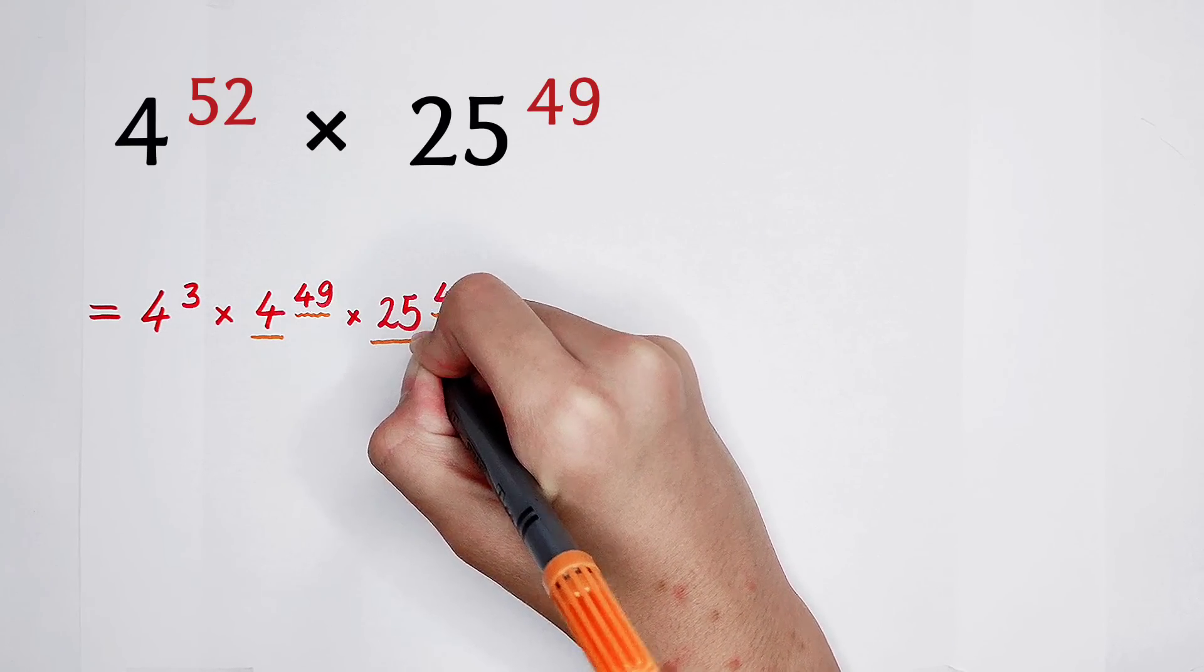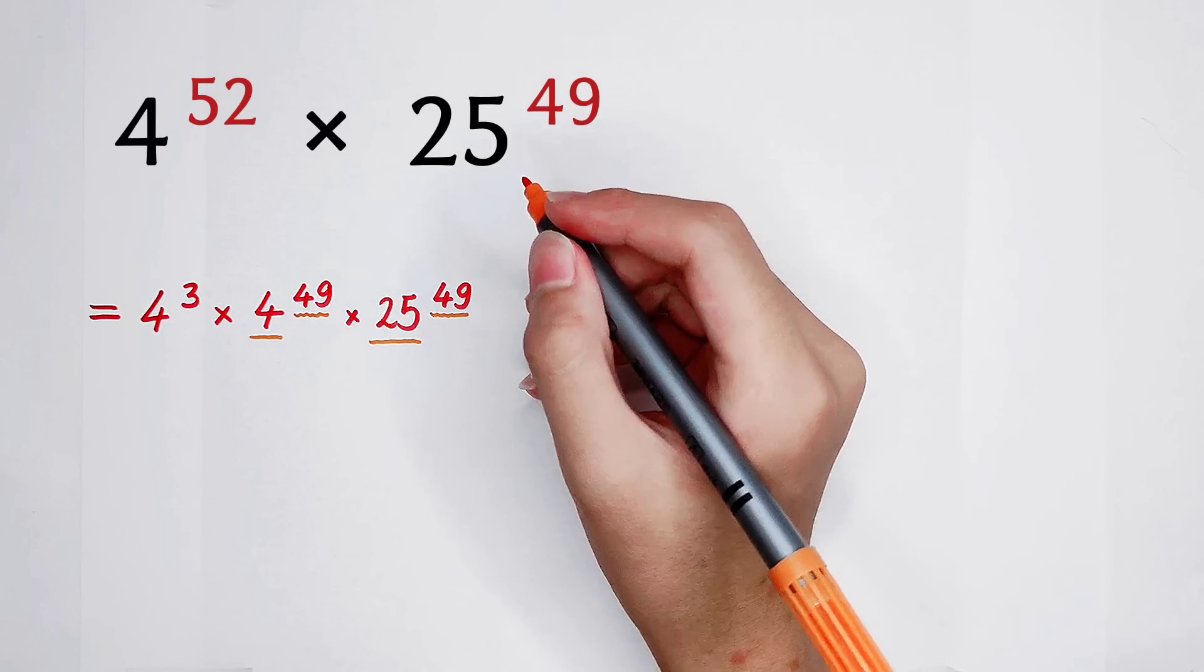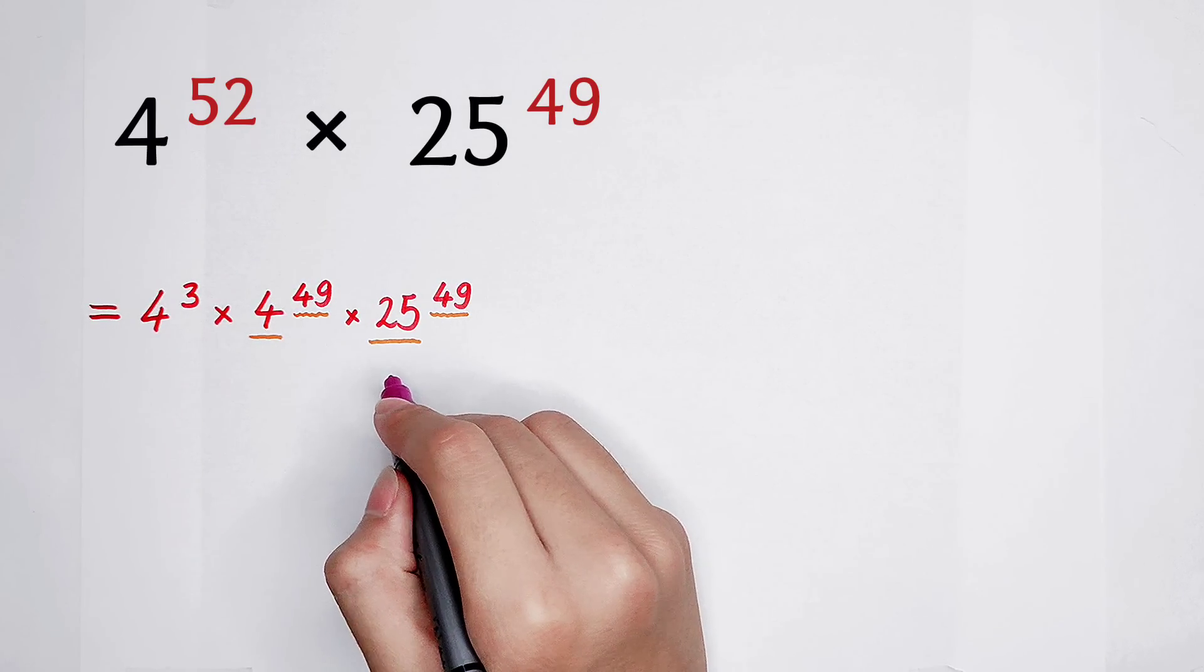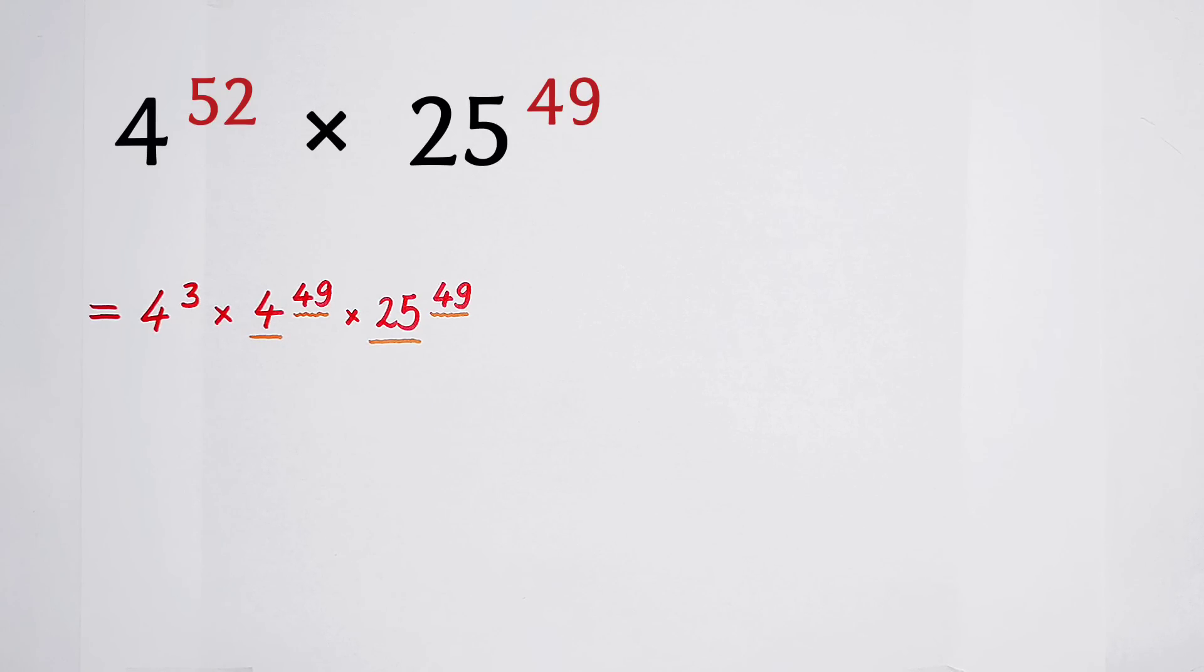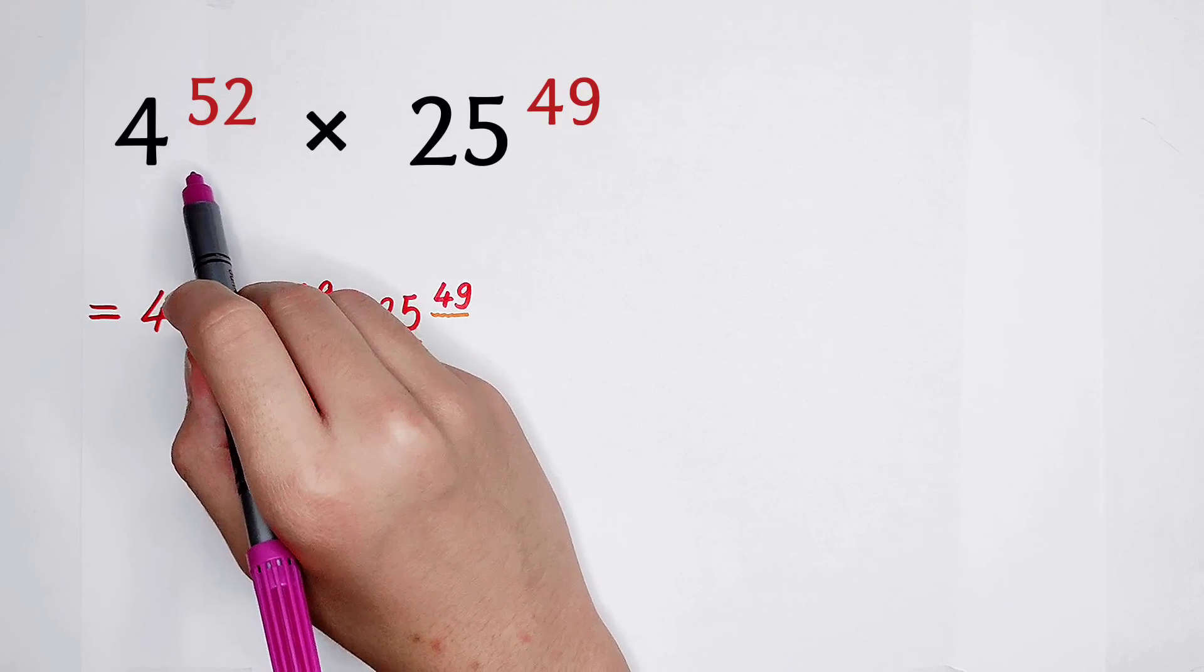And you have to pay attention. What is the multiplication of the two bases? 4 times 25. It is 100. This is a key. Because of this, we separate 49 from this exponent of 4, 52.